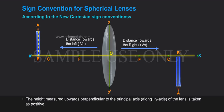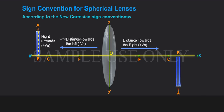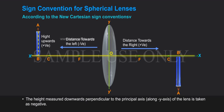The height measured upwards perpendicular to the principal axis along the plus y-axis of the lens is taken as positive. The height measured downwards perpendicular to the principal axis along the minus y-axis of the lens is taken as negative.